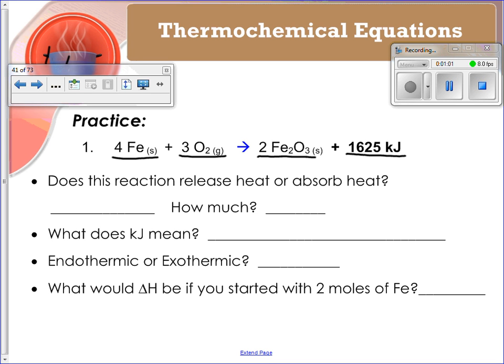So it says, does this reaction release heat or absorb heat? If the 1625 kilojoules is on the right-hand side of the equation, it is a product, which means it is being released as a product of the reaction in the same way that this is a product of the reaction. So therefore, it is releasing that heat. How much? It's going to be the value that's given to you, 1625.